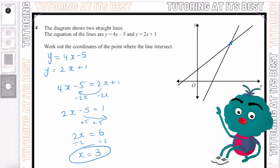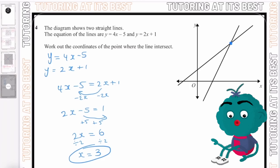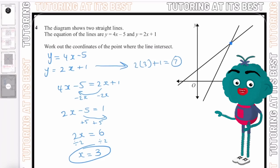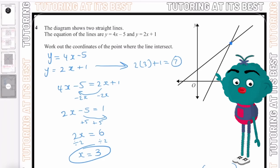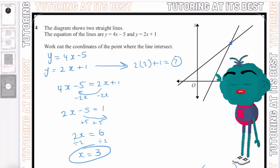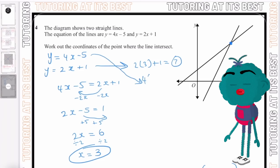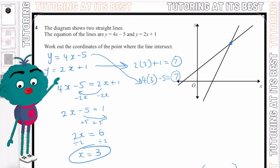Now we substitute x equals 3 into one of the y equations. Using the second one: 2 times 3 plus 1 equals 7. So y equals 7 and x equals 3 — that's the coordinate of the point where the lines intersect. We can verify with the first equation: 4 times 3 is 12, minus 5 is also 7. Confirmed.